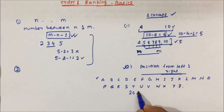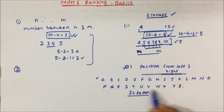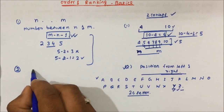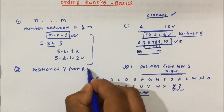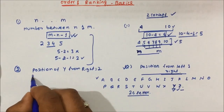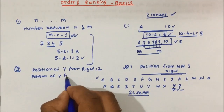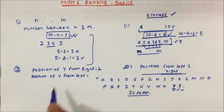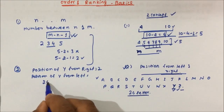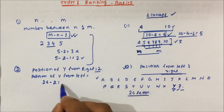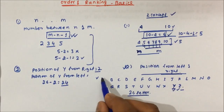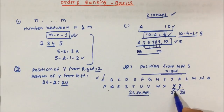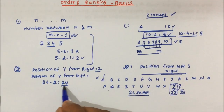Now if you see there are total 26 letters. If you see the position of Y from right, it will be 1 and 2 — so position of Y from right is 2. Now if we have to calculate the position of Y from left, what will we do? Generally what a student will do: total is 26 minus position from right is 2, so this will become 24. But you see the position of Y from left is 1, 2, 3 — so the total is 26, and from the left side the position of Y will be 25. But what we are getting is 24, so here also there will be a mistake if you are not careful.